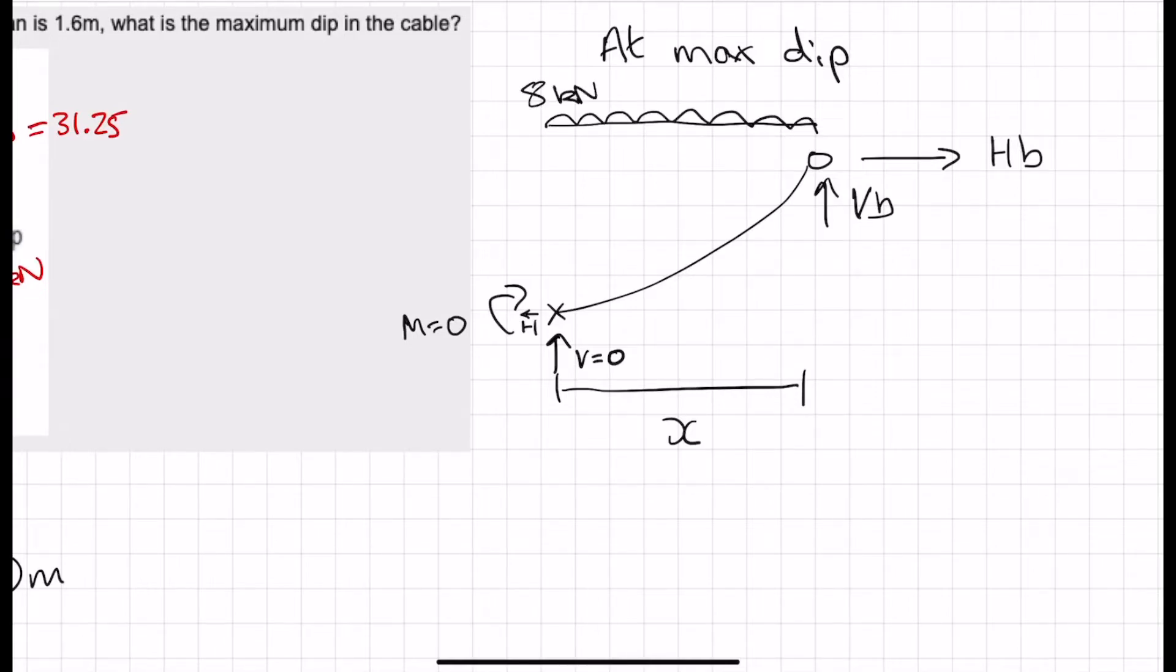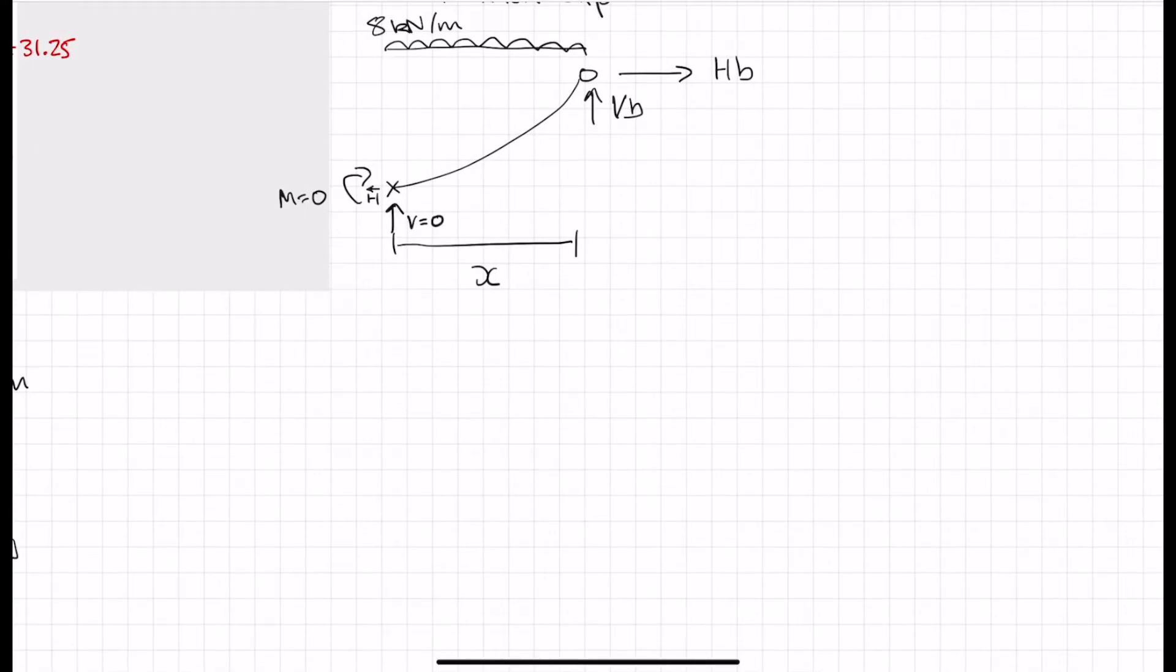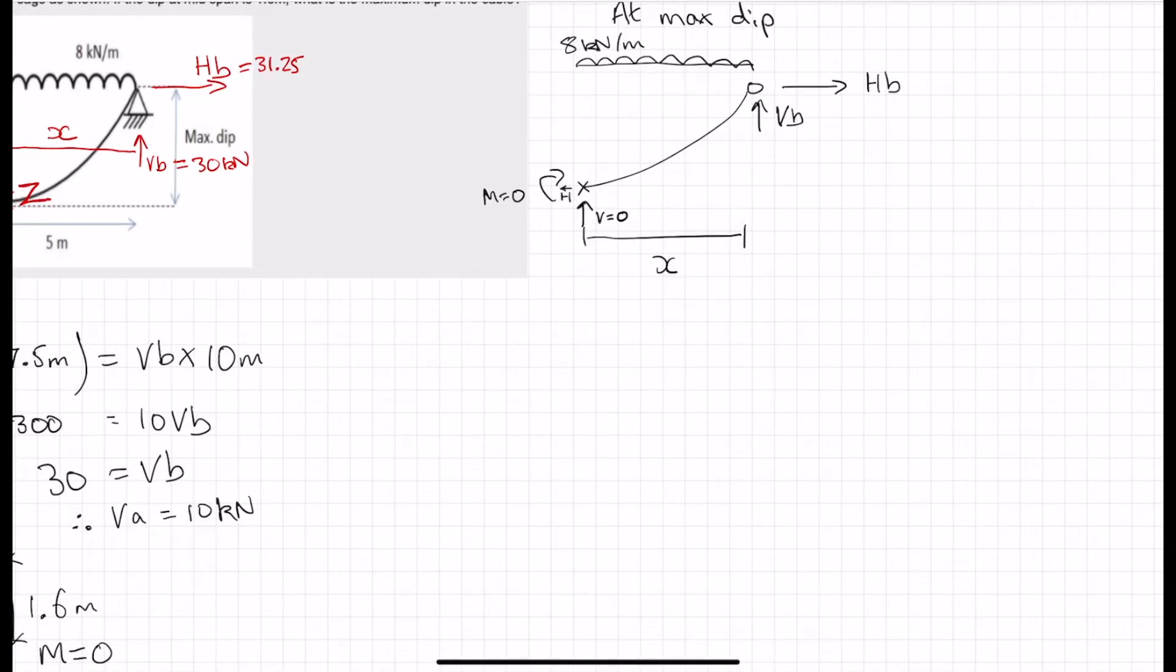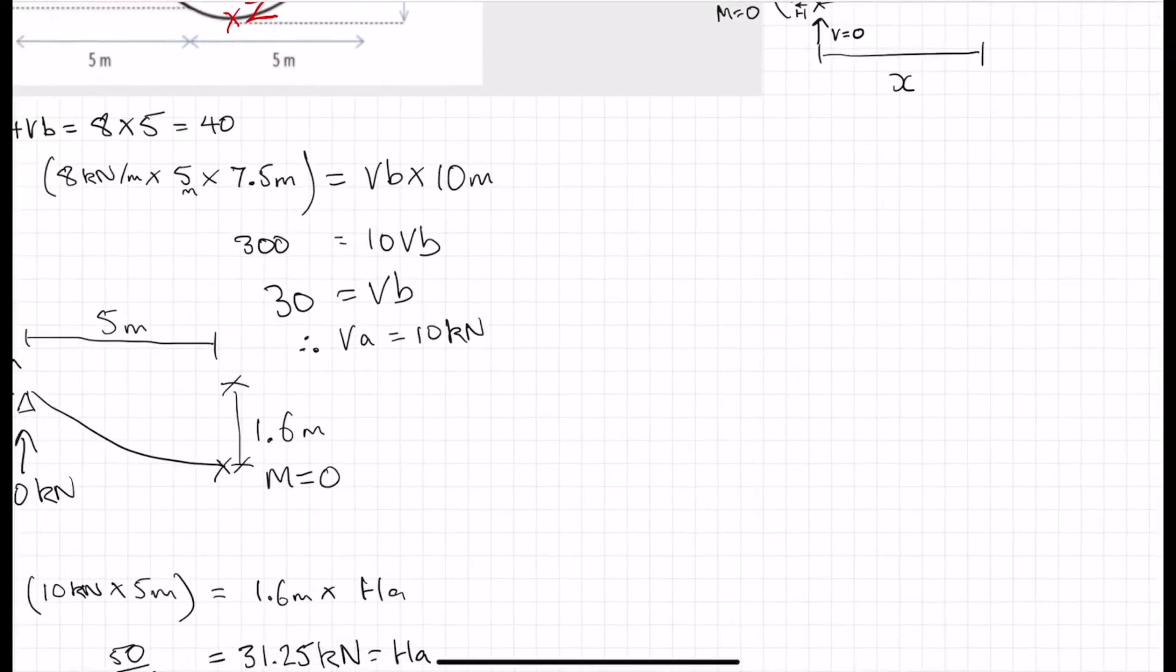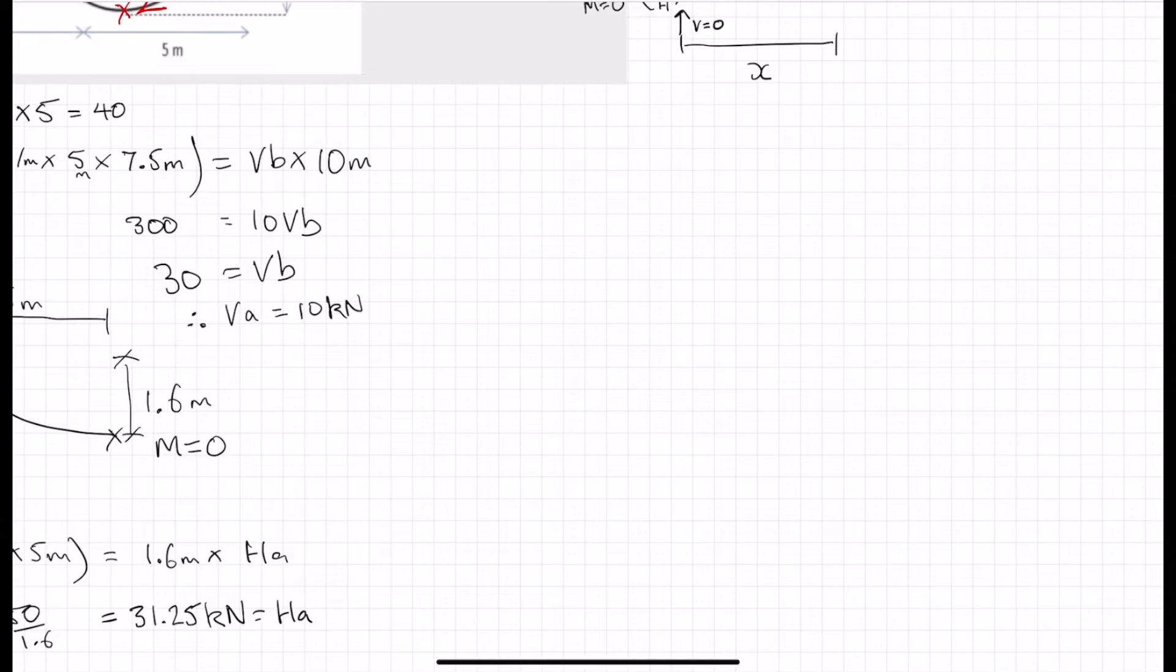Eight kilonewtons per meter. So with that assertion that at that free body diagram, V is equal to zero, we can resolve for whatever that X is. Can we? Oh, we still need to find out H. How would I go about this? Two unknowns. You know what? Let's look at the other side of the maximum dip. Slight change of tack.